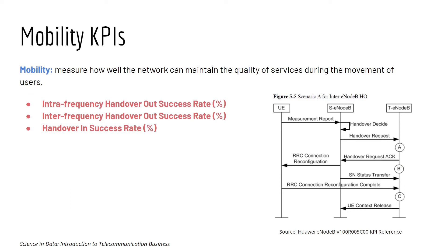Mobility KPI measures how well the network can maintain the quality of service during the movement of users. It is common in mobile communication that a user can move around physically while using the service, so we need to ensure smooth transitions and no service interruption. To understand this, we need to understand the concept of handover: when a device moves from one cell to another because the user is physically moving, or because signal quality at the old cell drops below a threshold.